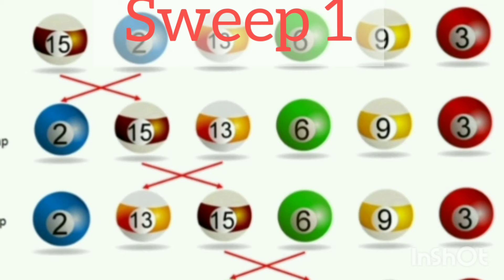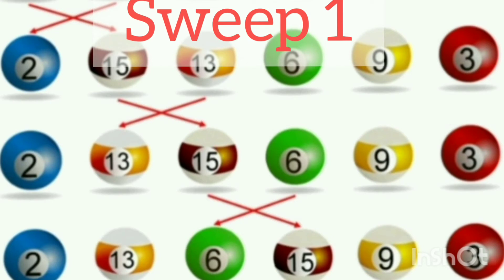In Step 2, we compare the second and third values — 15 and 13. Since 15 is greater, 13 and 15 get swapped, giving us 2, 13, 15. In Step 3, we compare 15 and 6. Since 6 is less than 15, we exchange their positions, and at Step 3 we get: 2, 13, 6, 15, 9, 3 in the list.